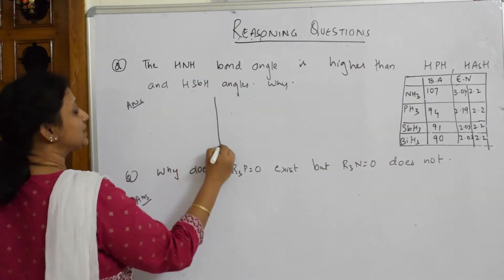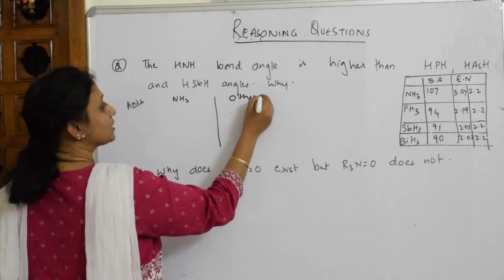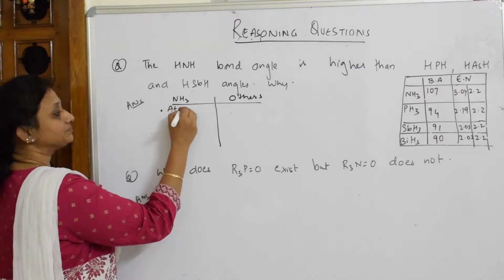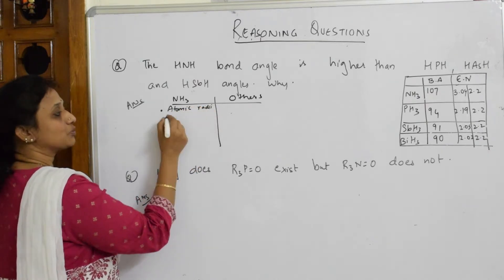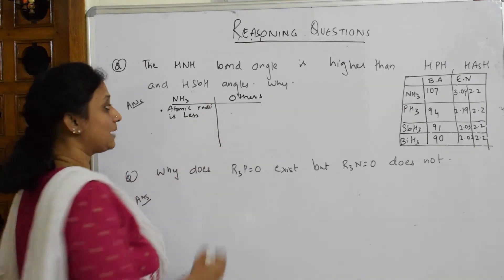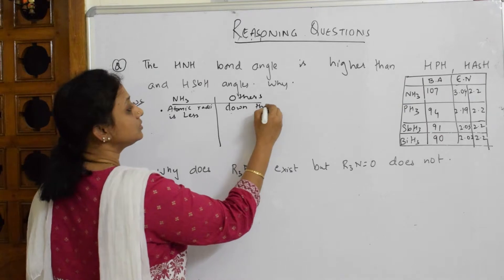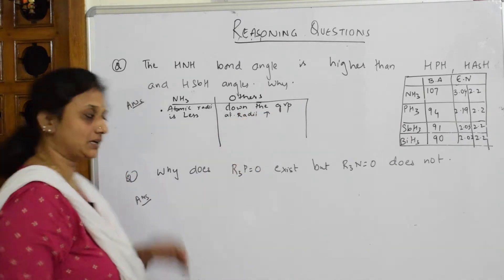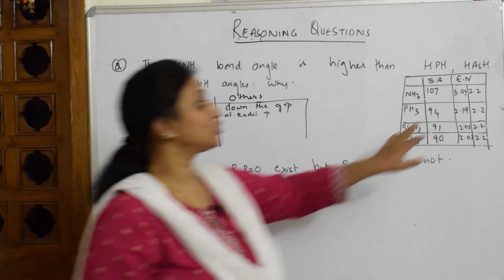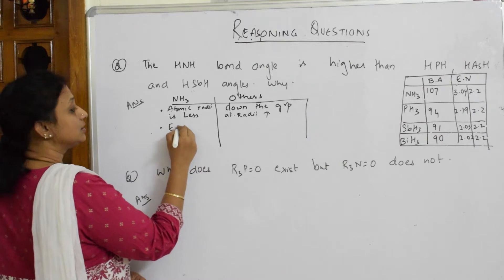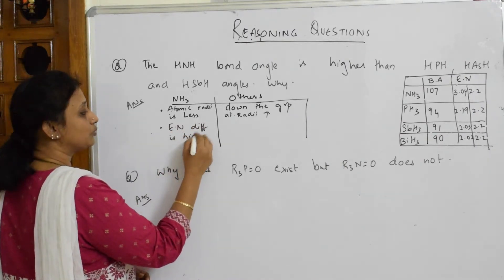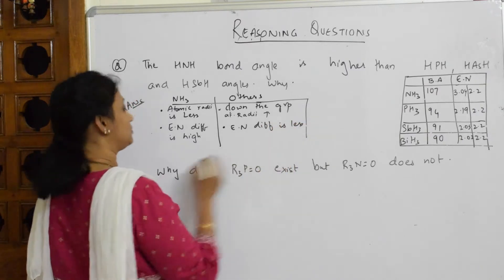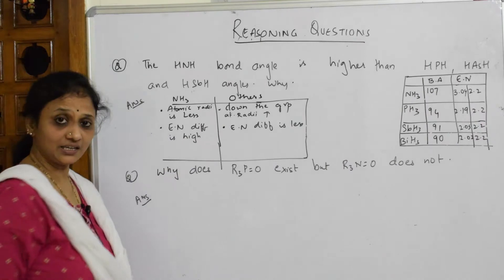They ask: why is the bond angle higher in ammonia? The first important criterion is atomic radii. For ammonia, the atomic radii of nitrogen is smaller. For the other elements, as we go down the group, atomic radii increases. When atomic radii is less, the electronegativity difference is high — as is the case in ammonia.